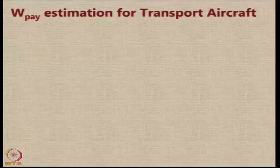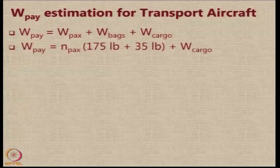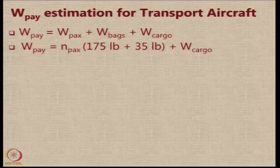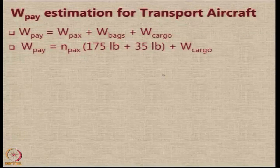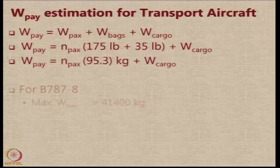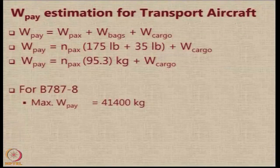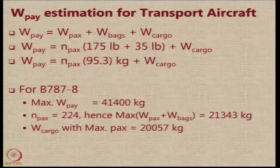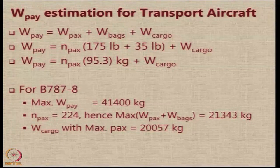Let us look at the estimation of payload for transport aircraft. The payload is basically the weight of the passengers, the weight of the baggage they carry, and the weight of cargo carried in the aircraft. For every passenger, we assume 175 pounds plus 35 pounds for standard baggage. For the Boeing 787, the maximum payload weight is 41,400 kg. Since it carries 224 passengers, the maximum passenger-and-baggage weight is 21,343 kg, leaving around 20,057 kg for cargo.